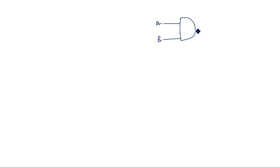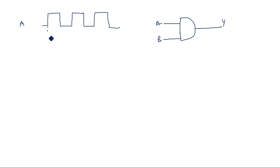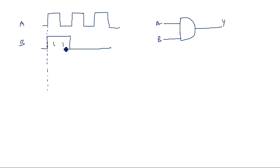This is the two-input AND gate with inputs A, B and output Y. AND gate is represented by the symbol of D. The first input A is given as one zero one zero one zero. You have to start and take this timing representation always for exact change of one to zero and zero to one. The B waveform has two continuous ones, then three continuous zeros, and again one — so one one zero zero zero and again one.